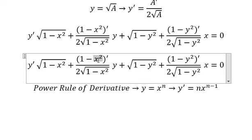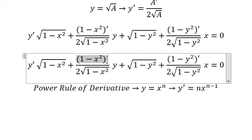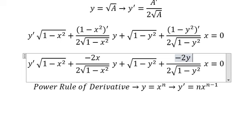So this one you get 2x, because number 2 multiplied by x to the power of 2 minus 1 gives x. So this one we have 2x with a negative sign here. This one is similar but with y, so we need to put negative 2y and the derivative of y.